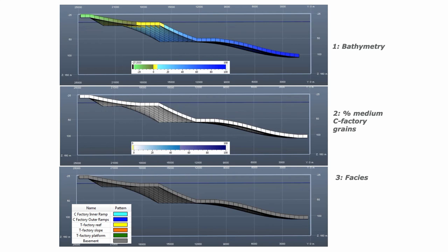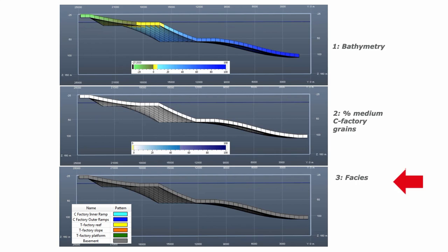Here are the model results shown as three parallel movies. At the top, the first shows bathymetry — water depth — with a maximum depth of 100 meters and some exposed carbonate with a bit of subsidence. In the middle, I show the proportion of medium grain C factory grains. At the bottom, I determine whether this is a T factory or C factory: if more than 60% of sediment is T factory, I call it a T factory and recognize reef, slope, and platform. If less than 80% is T factory producers, I call it a C factory. Basement is shown in gray.